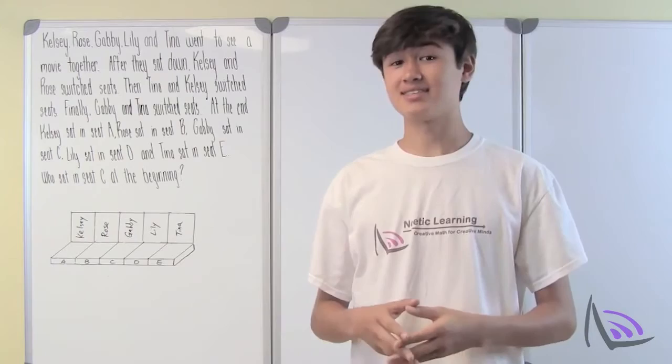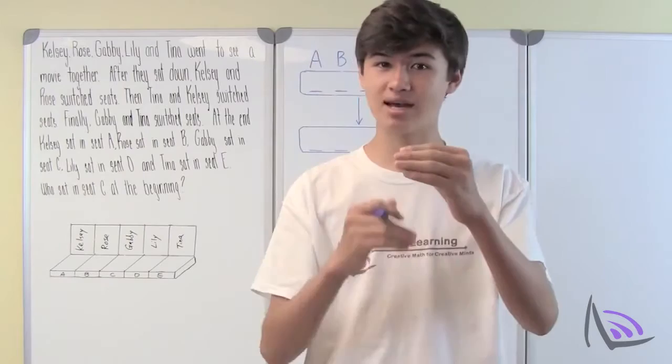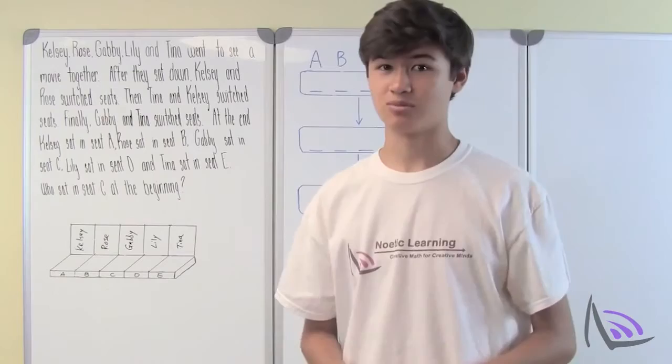They ask us: who was sitting in seat C at the beginning of the movie? That's a whole lot of information, so what do we do? Since it's so overwhelming, we should probably just go back through the situation step by step, use a flow chart to represent the situation visually, and see what we can do from there.